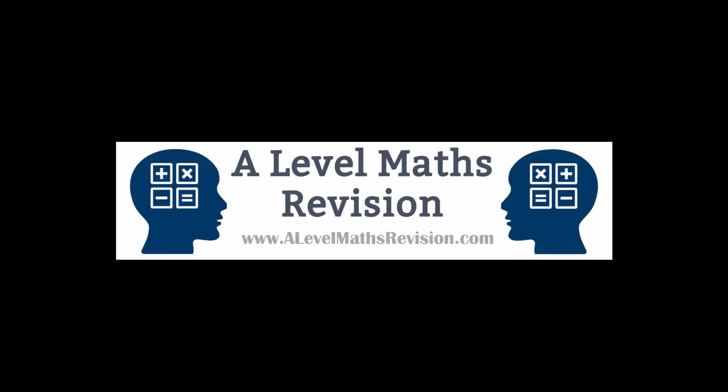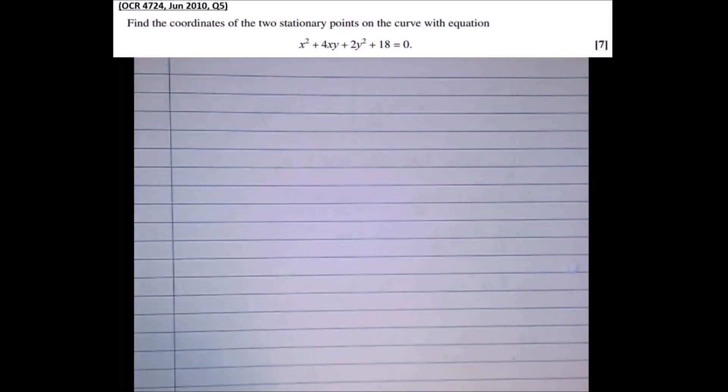In this tutorial video we're going to have a look at applying implicit differentiation to finding the stationary points of a curve. So this question here says find the coordinates of the two stationary points on the curve with equation x squared plus 4xy plus 2y squared plus 18 equals 0.